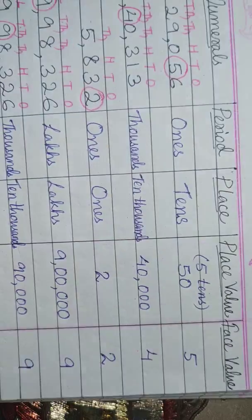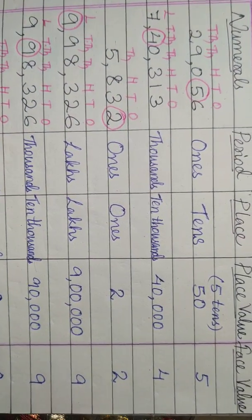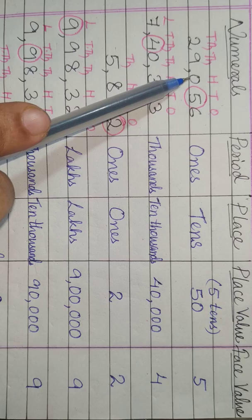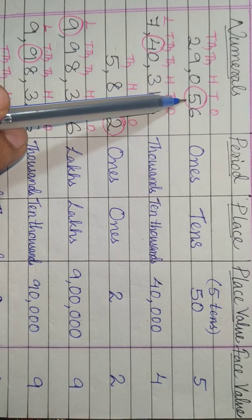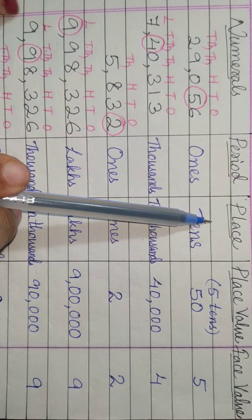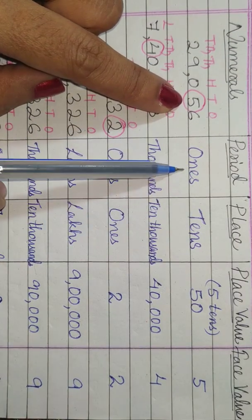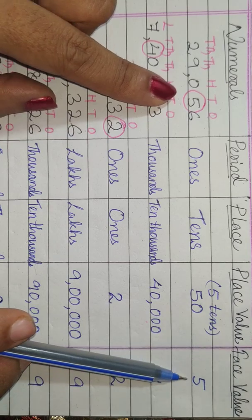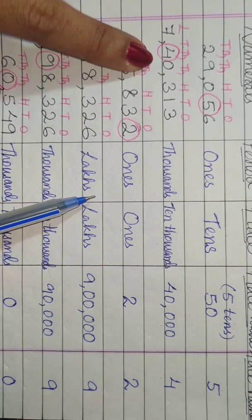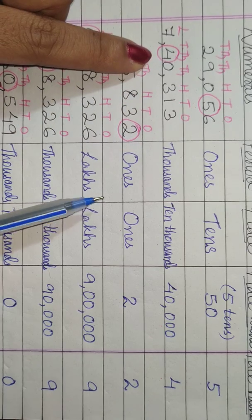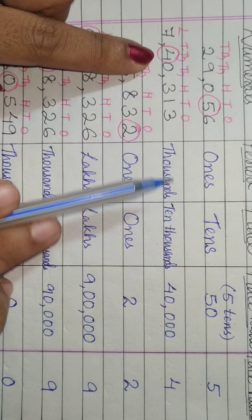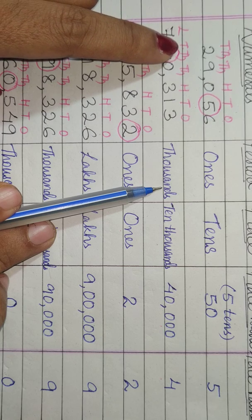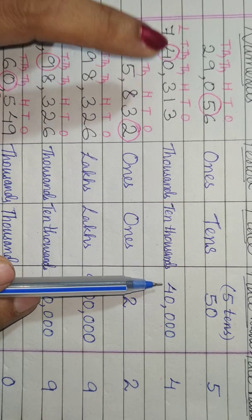Now I hope you can do a few more examples. Here are some: in 29,056, 5 is encircled — place is tens, period is ones, place value is 50, and face value is 5. In 7,40,313, four is encircled — place is ten thousands, period is thousands, place value of four is forty thousand, and face value is 4.